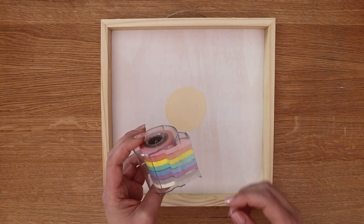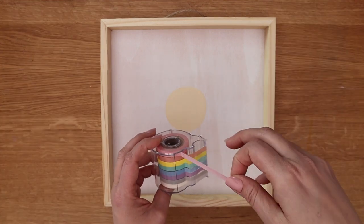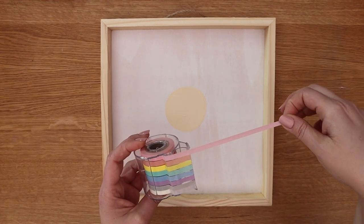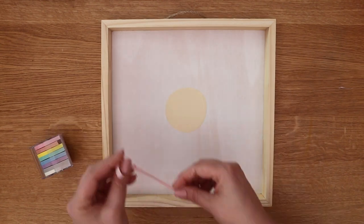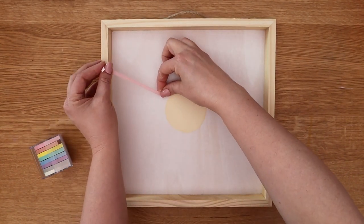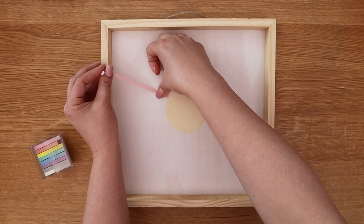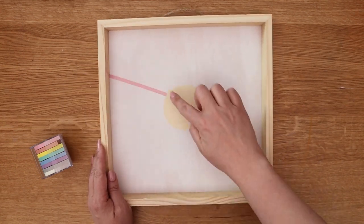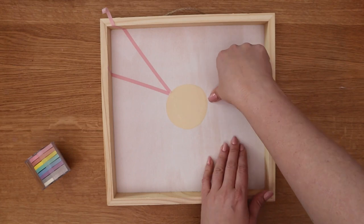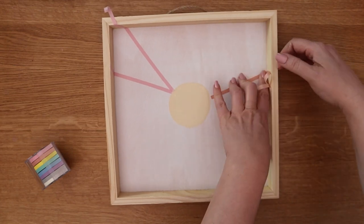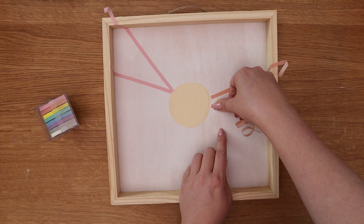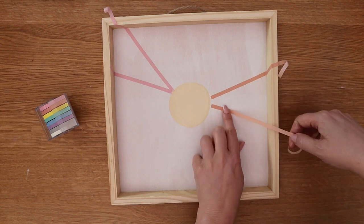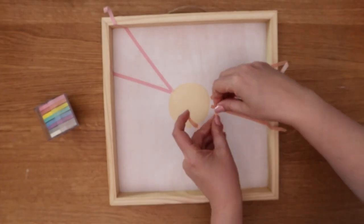Next I have some thin washi tape that I'm going to use to mark off 12 sections around my sun center. Because I wanted my piece to have an organic boho feel I did not want all of the sections to be the exact same size or spacing. So I'm just kind of eyeballing it here but with washi tape it's easy to adjust any sections that seem too big or too close together or too spread out.